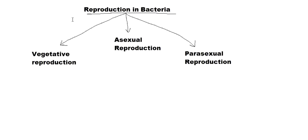We can somewhat relate it to ourselves also, and with the same logic we can call ourselves immortal too, but it stands out in the case of unicellular organisms. Reproduction in bacteria can be classified into three types: vegetative reproduction, asexual reproduction, and parasexual reproduction.